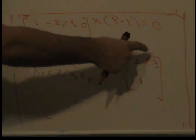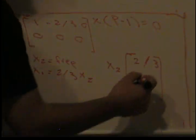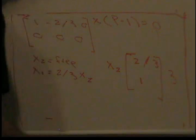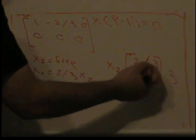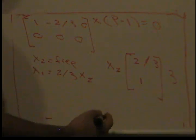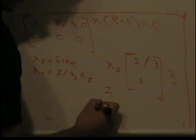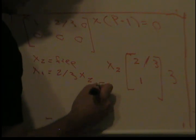But what we can do here to make our lives easier is we can multiply this by a number to get whole numbers, to get integers. So what I'm going to do is I'm going to multiply this by 3. When I do that, I get 3 times 2 is 6 divided by 3 is 2, and I get 3. So I'm going to use this over here.